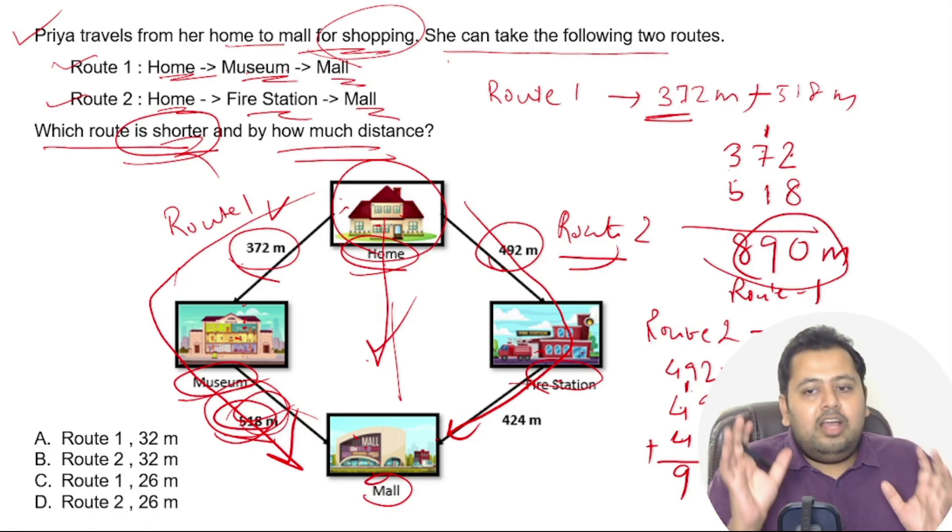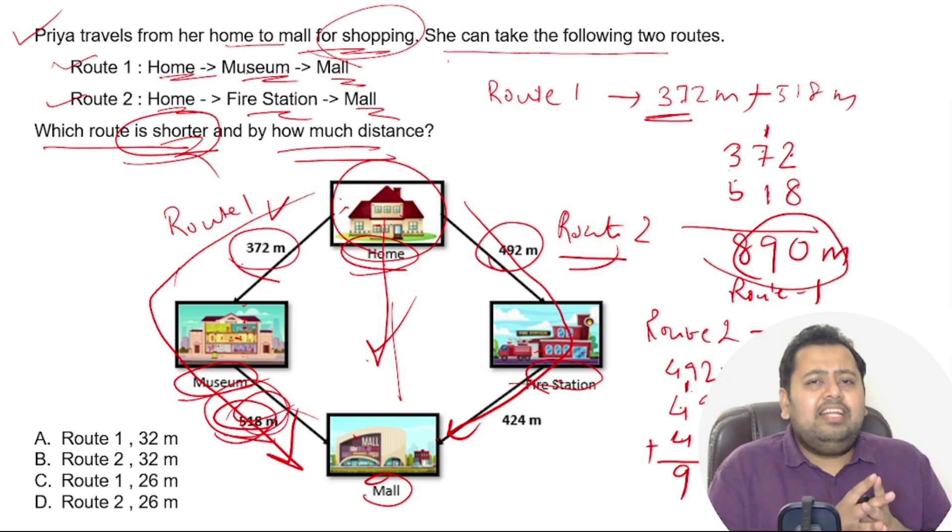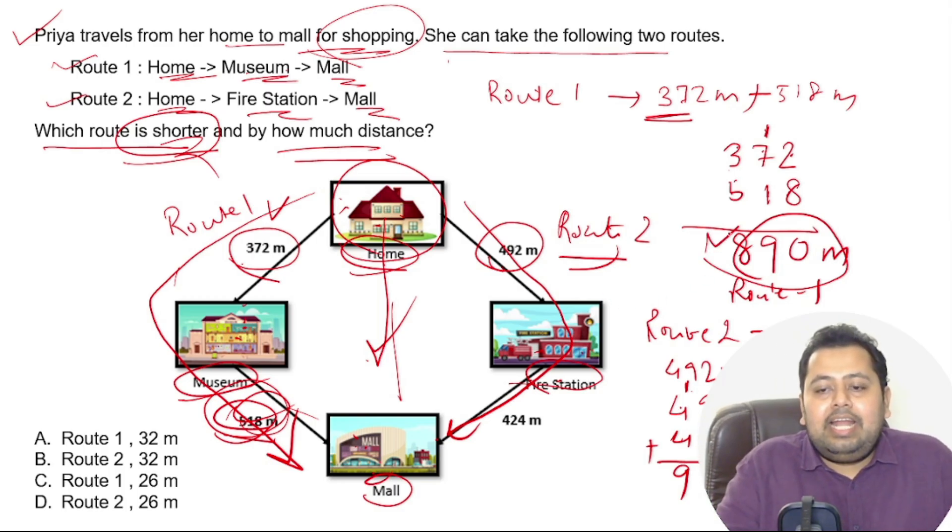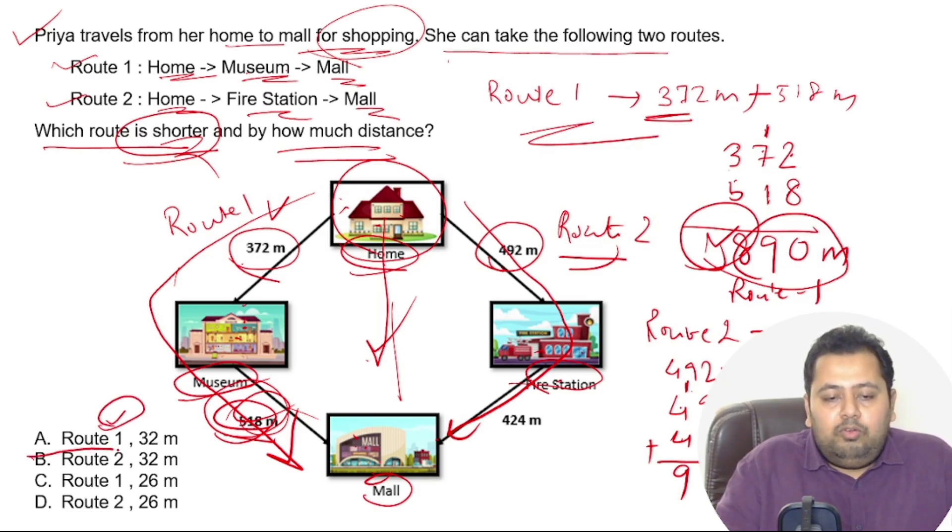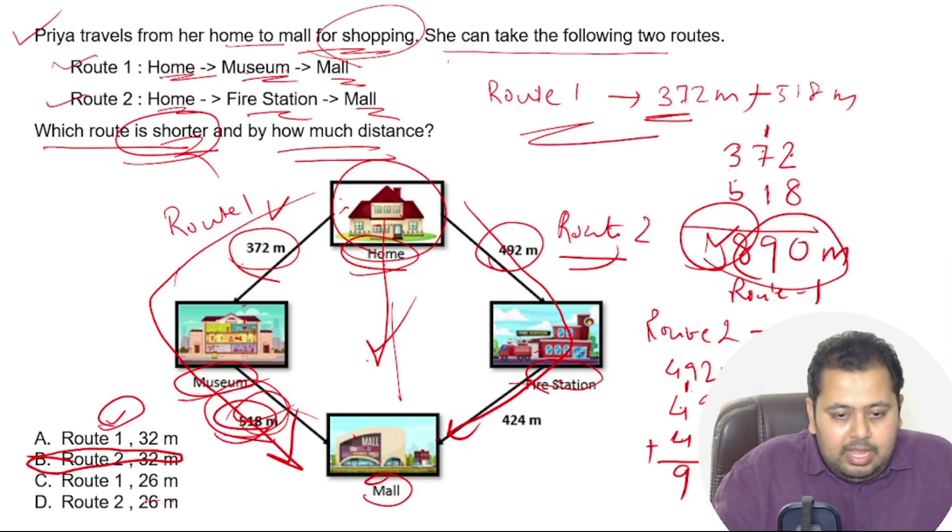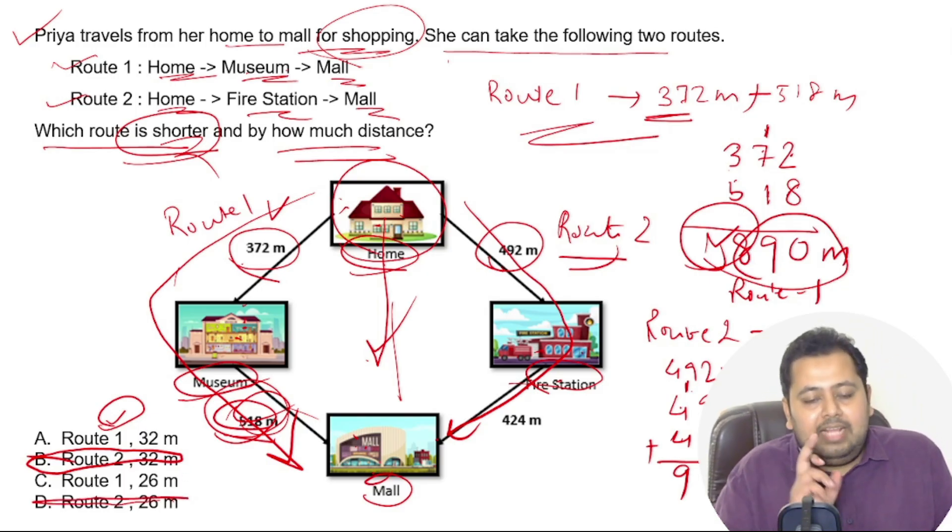Now tell me which is bigger: 916 meters or 890 meters? Obviously 916 is a larger number, so the shorter route is 890 meters, that is route number one. So route number one is the shorter route. Now we know that B cannot be the right answer and D cannot be the right answer. So the answer has to be between A and C.